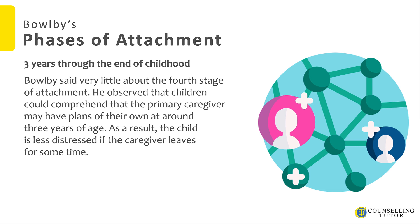From three years to the end of childhood, Bowlby said very little about this fourth stage. He observed that children could comprehend that the primary caregiver may have plans of their own at around three years of age, and as a result the child is less distressed if the caregiver leaves for some time. So those are Bowlby's phases of attachment.